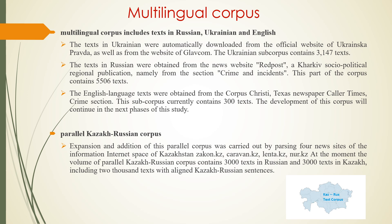Two corpora dedicated to criminal topics were used. The first multilingual corpus includes texts in Ukrainian, English, and Russian, obtained from internet news websites using the Python library parser BeautifulSoup. The Ukrainian subcorpus was downloaded from Ukrainska Pravda and Glovcom, containing 3,147 texts. The English texts were obtained from the Corpus Christi, Texas newspaper Caller Times, crime section, and this subcorpus currently contains 300 texts.